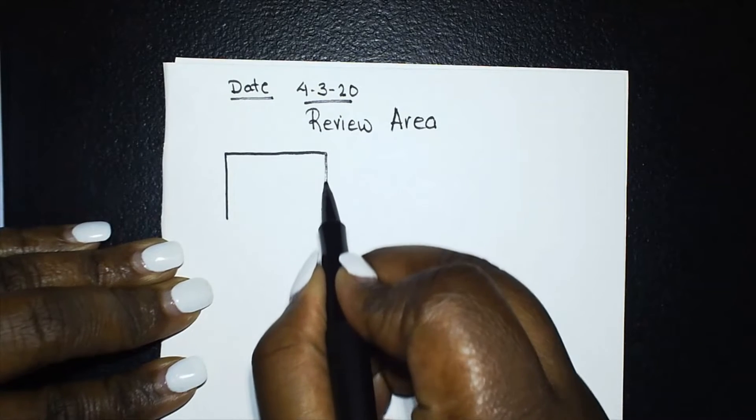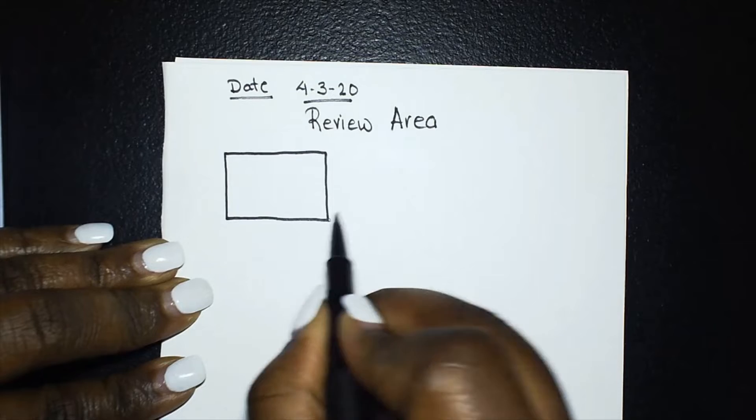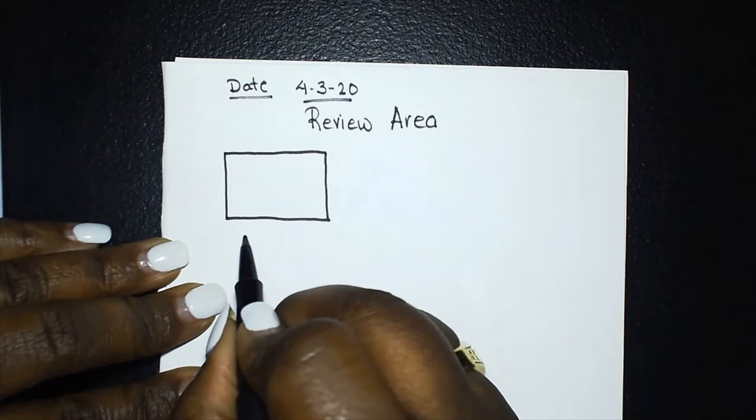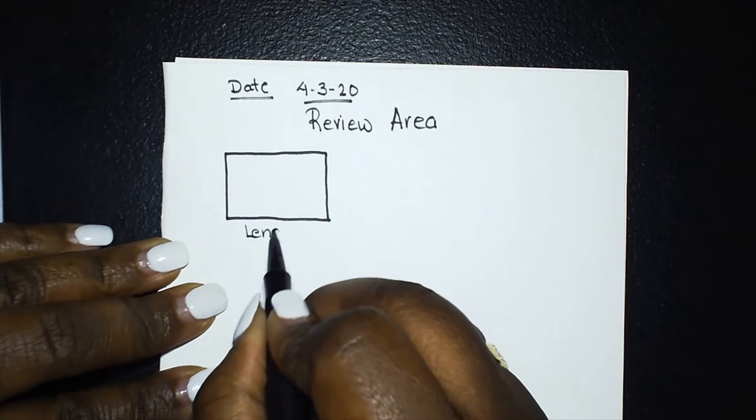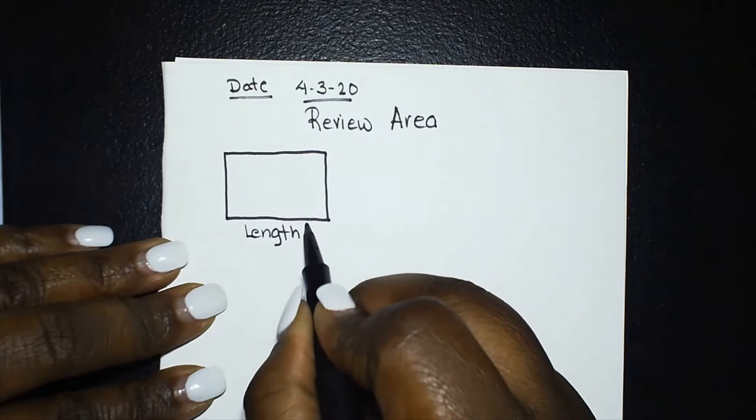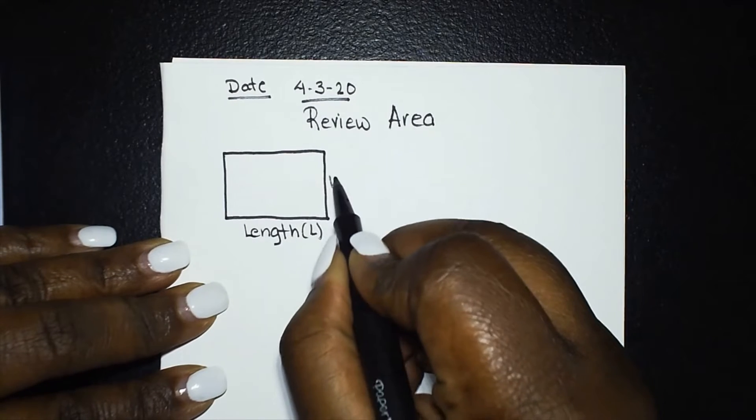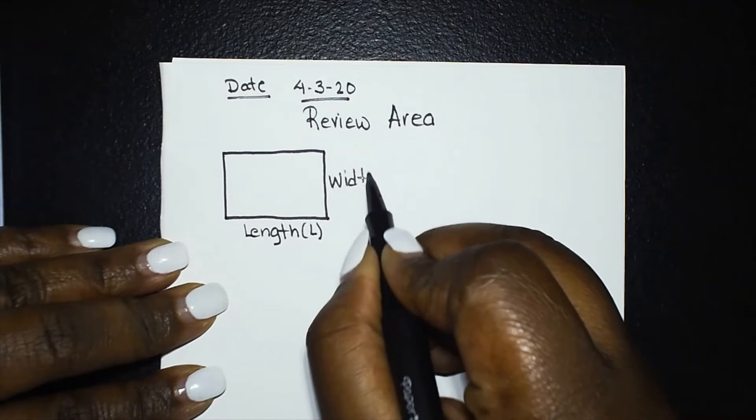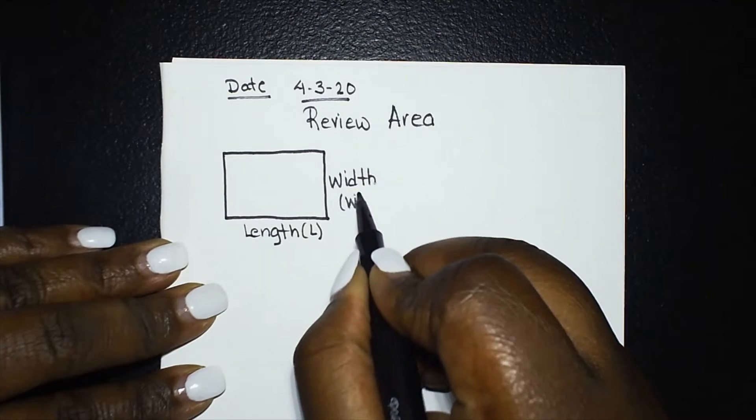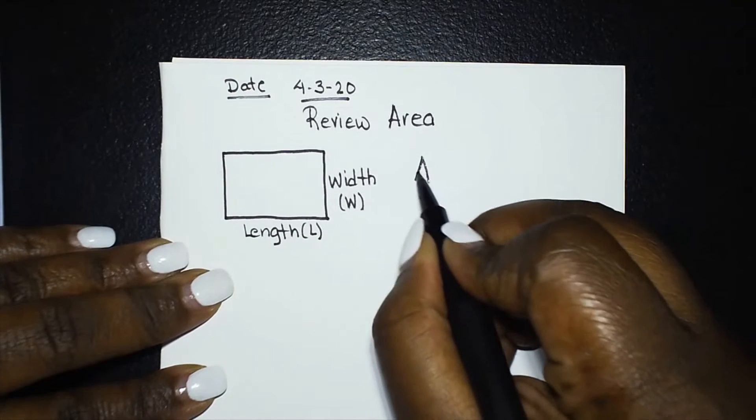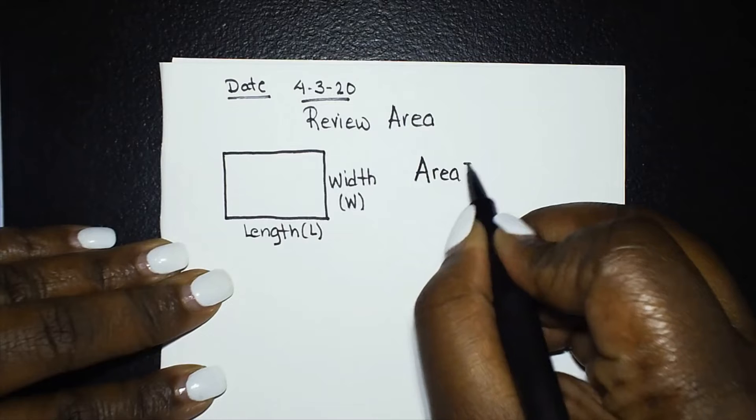So draw you a neat rectangle and here we have our length and I'll call that L and our width we'll call that W. Our area of this rectangle is equal to the length times the width.